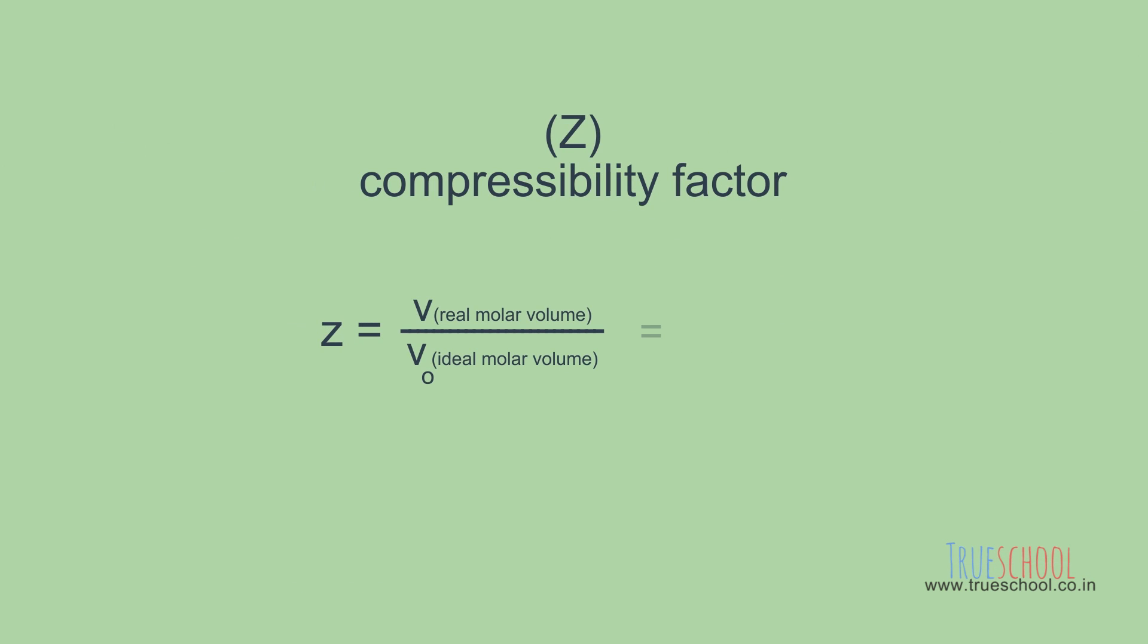This term can also be written as PV by RT because V0 is RT by P. You can remember either of these expressions and derive one from another easily using ideal gas equation. Just remember that here we consider n equal to 1.